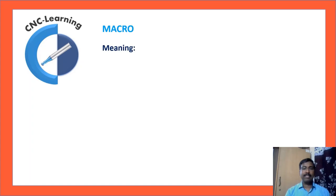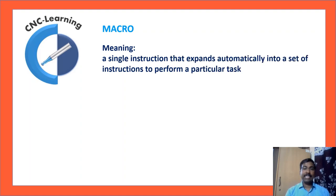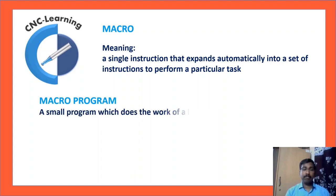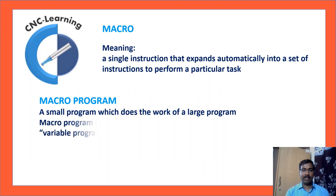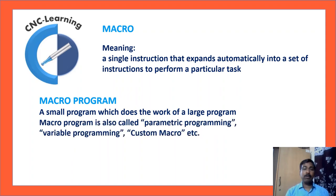First, let us see what is the meaning of macro. A single instruction that expands automatically into a set of instructions to perform a particular task. So a macro program is a small program which does the work of a large program. Macro program is also called parametric programming, variable programming, custom macro, etc.